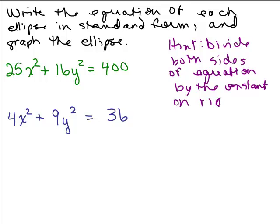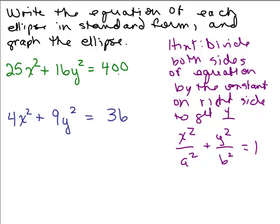Divide both sides of the equation by the constant on the right side to get a 1, right? Because you know the form of the ellipse is x squared over a squared plus y squared over b squared equals 1, but this says equals 400, so there's a problem here. So what are you going to do to both sides so that that's a 1 on the right side? You're going to divide both sides by 400. That's my hint. Try these on your own first.